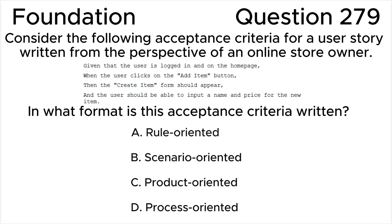Consider the following acceptance criteria for a user story written from the perspective of an online store owner. Given that the user is logged in and on the home page, when the user clicks on the add item button, the create item form should appear, and the user should be able to input a name and price for the new item.